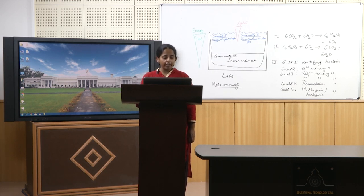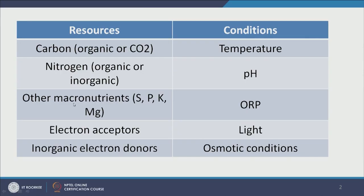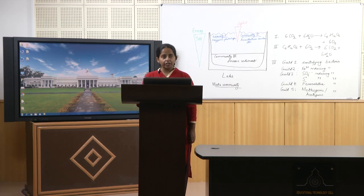Some cells also require macronutrients — nutrients required in good quantities such as sulfur, phosphorus, potassium, and magnesium. There are also micronutrients required in trace amounts; we have talked about how trace elements are essential for making certain enzymes and amino acids. Microbial communities have ways of finding, trapping, and recycling micronutrients, so the environment does not need to be rich in them — but it definitely needs to be rich in carbon, nitrogen, and other macronutrients.